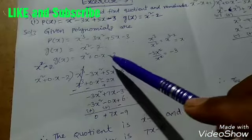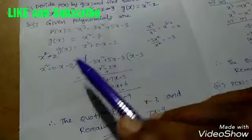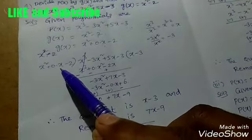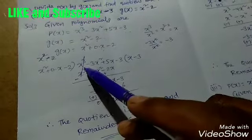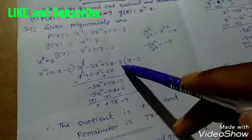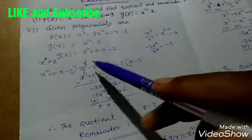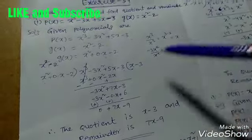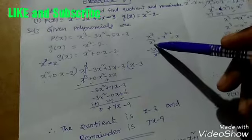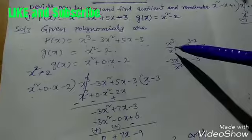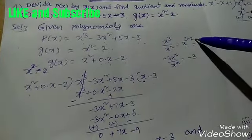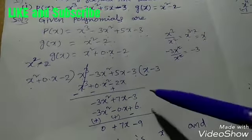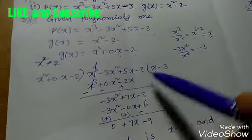Now, p(x) is the dividend and g(x) is the divisor. We divide x³ - 3x² + 5x - 3 by x² + 0·x - 2. The first term of the dividend is x³ and the first term of the divisor is x². So x³ ÷ x² = x (using the formula aᵐ/aⁿ = aᵐ⁻ⁿ). We write x in the quotient and multiply x by the divisor.